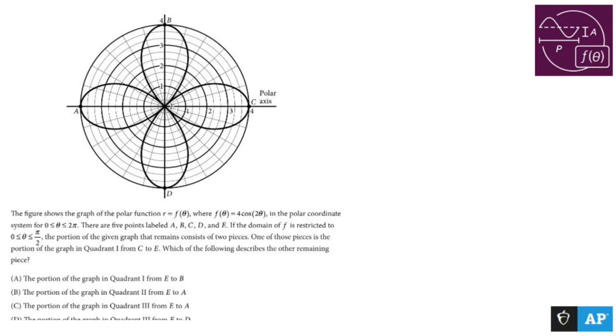The figure shows the graph of the polar function r equals f of theta, where f of theta is 4 cos 2 theta. In the polar coordinate system between zero and 2 pi, which is usually the case.